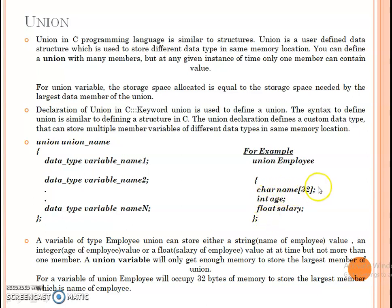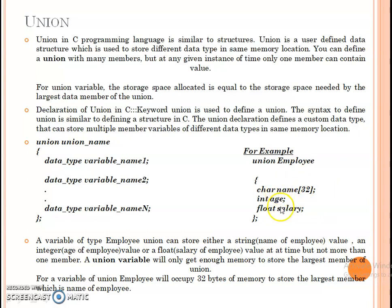Here the age is only 2 bytes of memory space, and the float is also 4 bytes of memory space. In general, a structure would allocate 32 bytes plus 2 bytes plus 4 bytes — a total of 38 bytes. But in a union, only 32 bytes of memory space is allocated, because the highest memory needed is by the name variable, which is the largest variable.